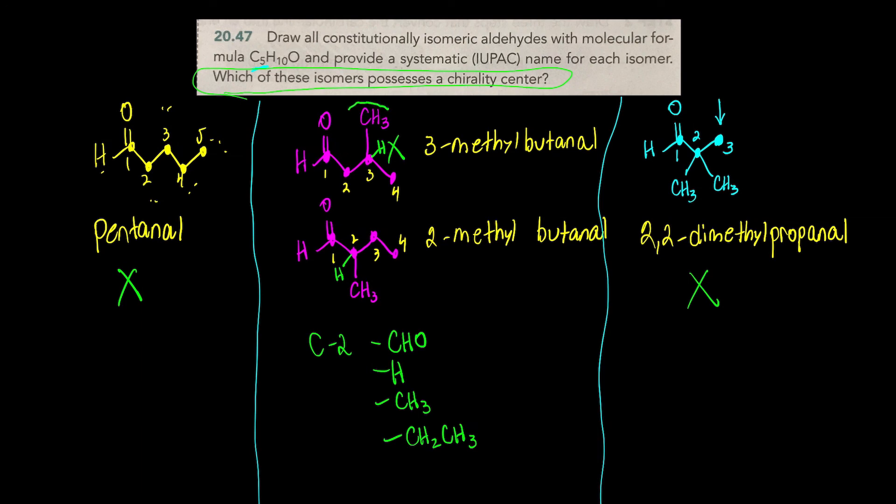Why not carbon three up here? It has hydrogen, it has a methyl, and it has another methyl. These two methyl groups are the same, so it's not four different groups. Why not carbon two right here? Because we have three methyl groups. So the only molecule that possesses a chirality center is this one here.